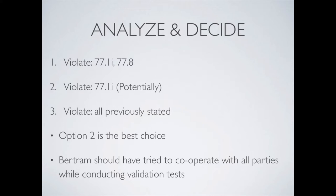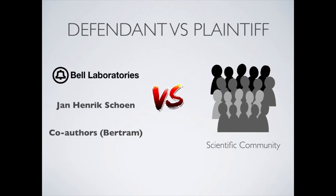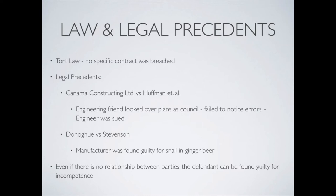Now, let's look at some of the legal implications of the case. Here's a quick refresh of the parties involved. The defendants would be Bell Labs, Dr. Schoen, as well as Bertram, and the plaintiffs would be the scientific community. We can see that this is most likely a tort law case, as no specific contract was breached. Legal precedents include Cannibal Constructing vs. Huffman, and Donohue vs. Stevenson. These precedents tell us that even if there was no relationship between parties, the defendants can still be found guilty for incompetence.